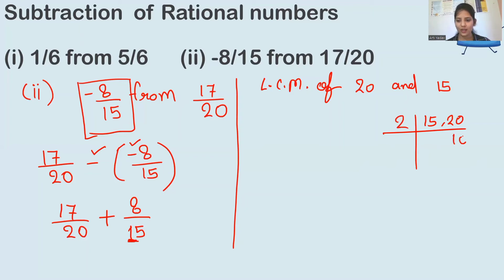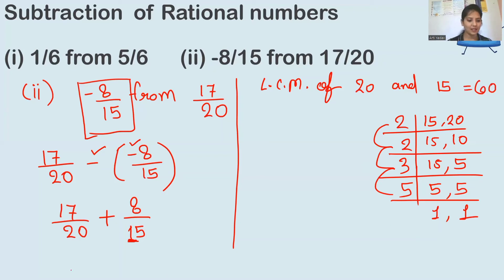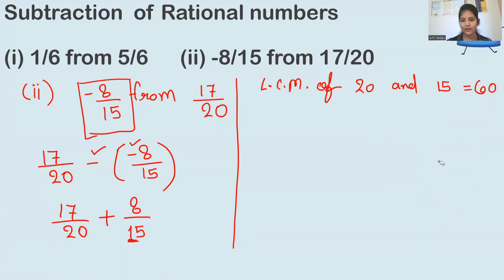20 is divisible by 2: 2 tens are 10, and 15 stays the same. Again 2 fives are 5, and 15 stays the same. This is divisible by 3: 3 fives are 15, and 5 stays the same. Now divisible by 5. Let's multiply: 2 times 2 is 4, 4 times 3 is 12, and 12 times 5 is 60. So the LCM is 60.